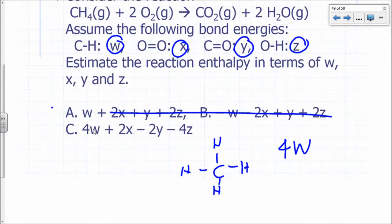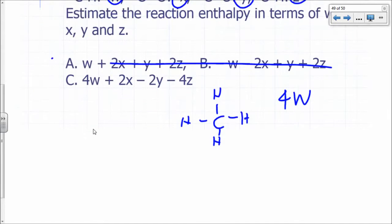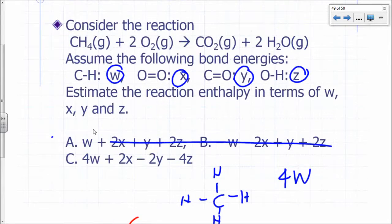Oxygen, how many oxygen-oxygen bonds would you have to break? What's the Lewis structure for O2? So that's one oxygen-oxygen double bond, and you have two of those. So you're going to need 2X, right? So this is the delta H for bond breaking.